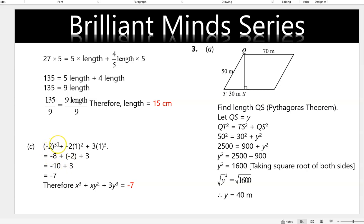For substitution into variables: negative 2 to the exponent 3 means negative 2 times negative 2 times negative 2, which gives negative 8. 1 to the exponent 2 is 1, giving negative 2. 1 to the exponent 3 gives 3, and 3 times 1 is 3. When you simplify you get negative 7, so negative 7 is the final answer.